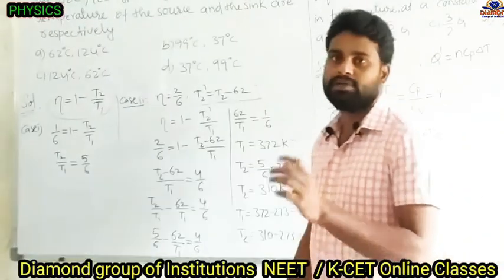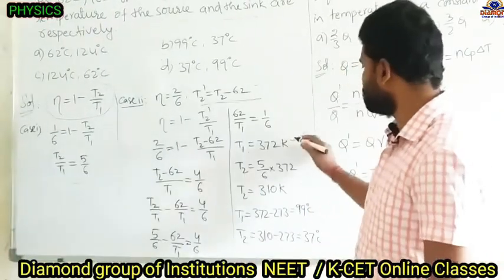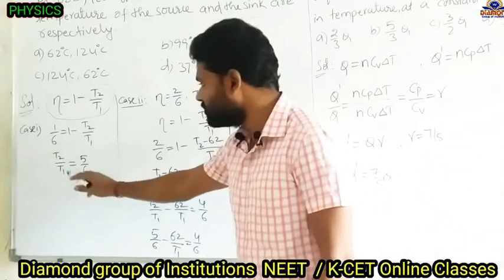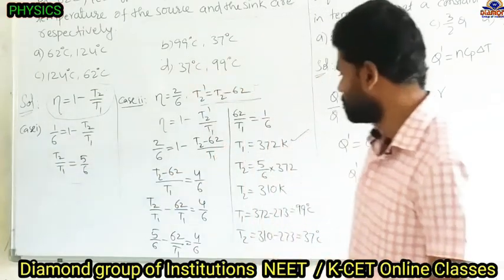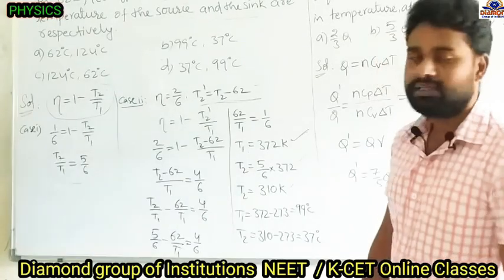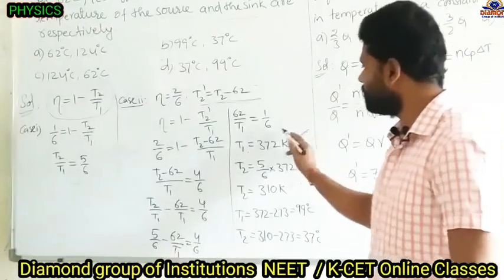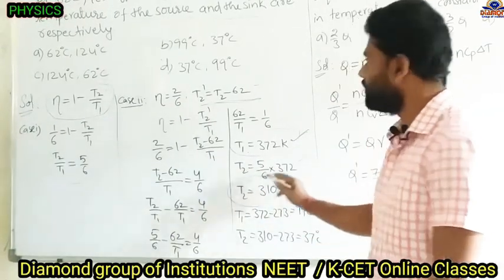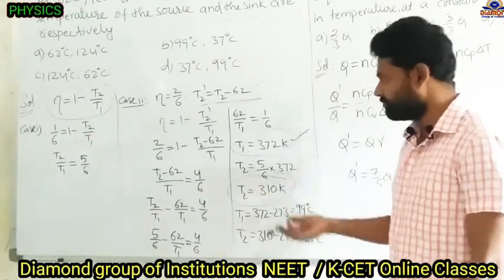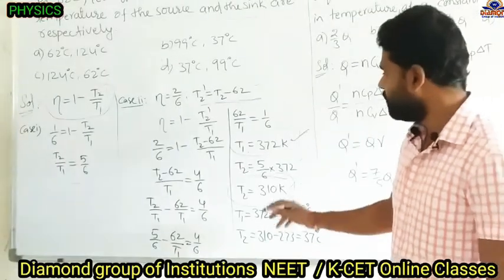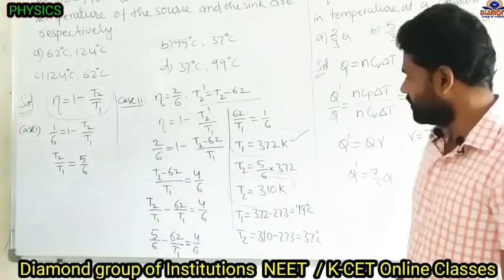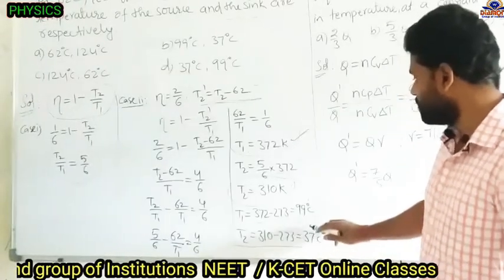Temperatures of source and sink are absolute temperatures in Kelvin. T₁ = 372 K. Using T₂/T₁ = 5/6: T₂ = (5/6) × 372 = 310 K. Converting to Celsius: T₁ = 372 − 273 = 99°C and T₂ = 310 − 273 = 37°C.